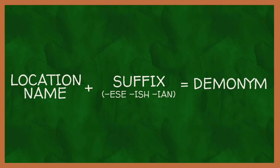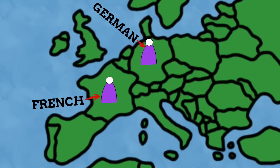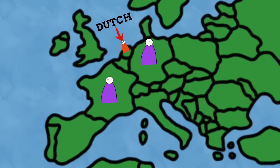Most demonyms are made by using the location's name and adding one of the established demonym suffixes, most commonly the suffixes -ese, -ish, and -ian. There are some exceptions to this rule, however, like French and German sound like the names of their countries but don't really use any of those suffixes, and we also have Dutch as the demonym for someone from the Netherlands, which is a whole story unto itself.